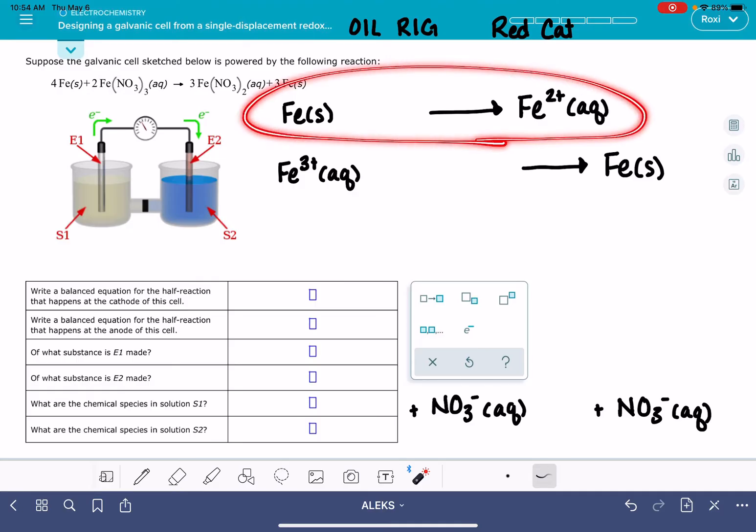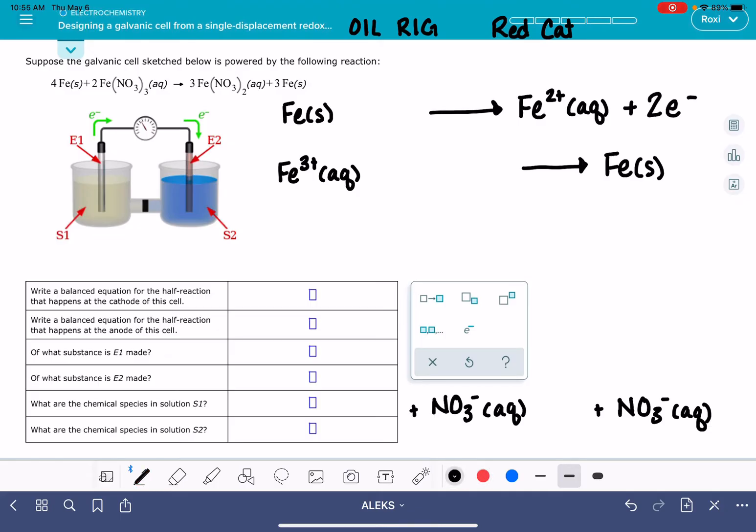So let's go ahead and balance this half reaction right here. The irons are already balanced. That means we just need to add two electrons over here to the right-hand side and it's balanced. And then let's do the same thing for this one. We'll need to add three electrons on the left-hand side and it's balanced. These are the actual redox reactions that are occurring in this galvanic cell. So we can enter them into these boxes right here. We just need to know which is the oxidation, which one is the reduction.